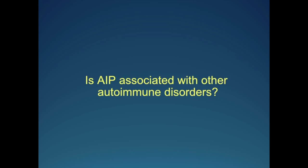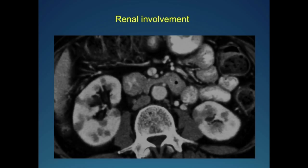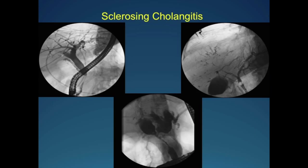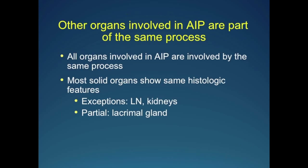There's another common misunderstanding: that AIP is associated with many other autoimmune disorders. I get calls saying a patient has SLE and pancreatic disease — is this autoimmune pancreatitis? There are recognized entities like retroperitoneal fibrosis, renal lesions that look like tumors, sclerosing cholangitis or cholangiocarcinoma-like pictures, and orbital pseudolymphoma. The key is that all of these so-called autoimmune diseases are actually part of the spectrum of IgG4 disease — not independent entities. All the organs have IgG4 infiltration. There are very few diseases truly associated with autoimmune pancreatitis; IBD might be one, but the rest are manifestations of the same disease.